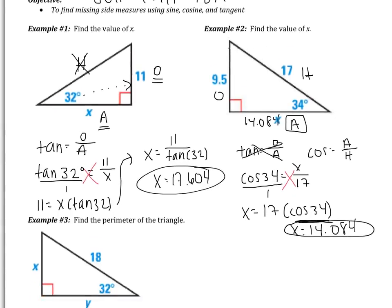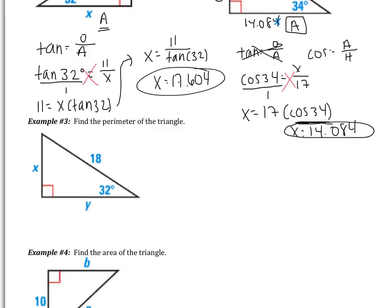Let's see how you all can do. Looking at example 3, it says find the perimeter of the triangle. So let's start by labeling our sides. We have side 32. The x is going to be opposite. The y is going to be adjacent. And then the 18 is going to be hypotenuse.